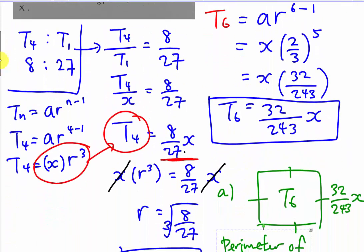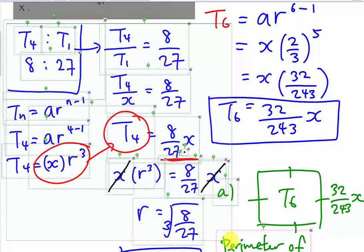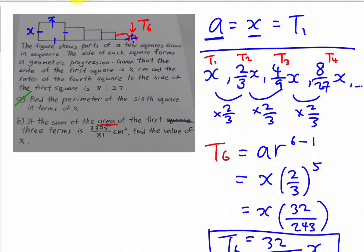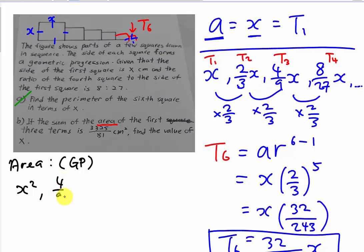I'm going to form the new geometric progression for area. The first area is just x squared. The second is 2/3 x multiplied by 2/3 x, which is 4/9 x squared. The third one will be 16/81 x squared. And then you continue. So this is the GP for area.